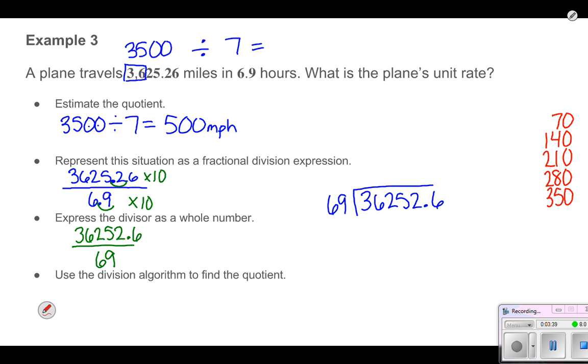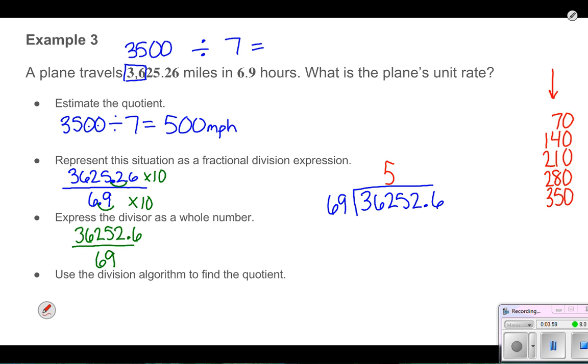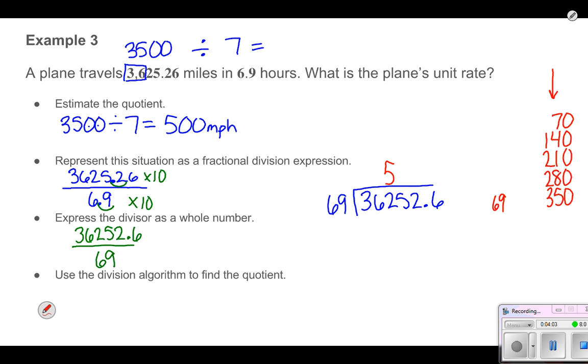If I'm dividing by 69, I can't get any sets in 3 or 36, but I can get a certain amount into 362. When I look over here, I can see that 5 sets of 70 was 350. I bet that's going to be pretty close for my 69, so I'm going to try 5 sets of that. 9 times 5 is 45, carry the 4. 6 times 5 is 30, plus the 4 is 345. I'm going to subtract that 345. 12 minus 5 is 7, 5 minus 4 is 1. So my remainder is 17, which is smaller than my divisor of 69, so I'm doing okay.